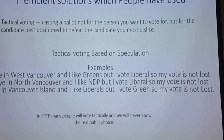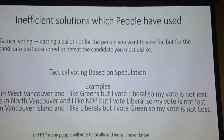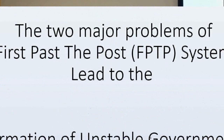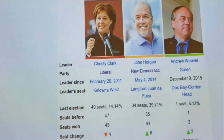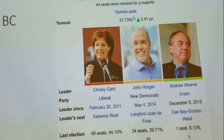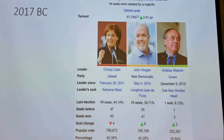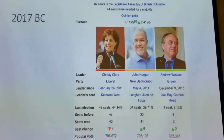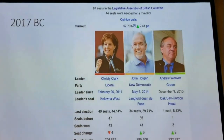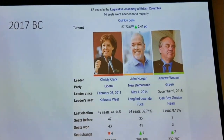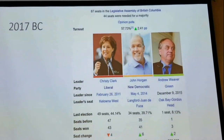People have also come up with tactical voting as a solution. These two major problems — observed both theoretically and empirically — have led to unstable governments, contrary to the myth that switching from first-past-the-post causes instability. Look at the current government: if the NDP does one thing the Greens don't like, the government will collapse. Is it a stable government? No.